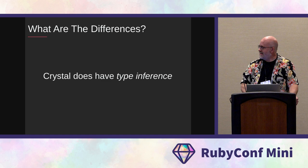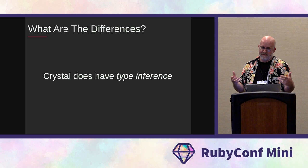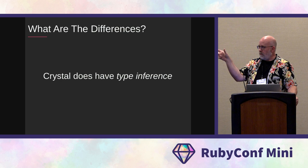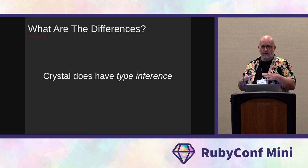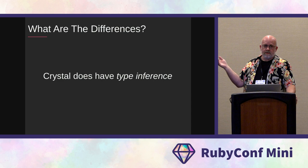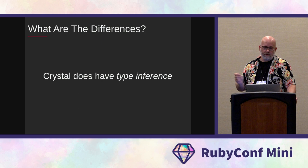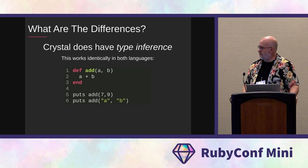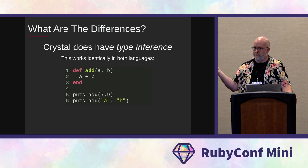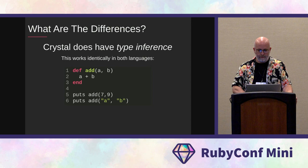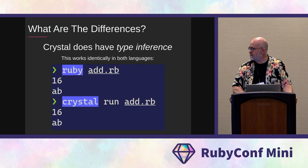Crystal does have type inference, which means in a lot of cases it can figure out the types of things so you don't have to specify them. Back in the early example where you had the array with a type specified, if you just use syntax to specify a static array with strings in it, Crystal sees that and knows it's an array of strings — you won't have to specifically tell it. It's only when it's ambiguous that you have to tell it what your types are. So in this example, nothing is telling Crystal what A or B is, and this will work exactly the same in Crystal as it does in Ruby.